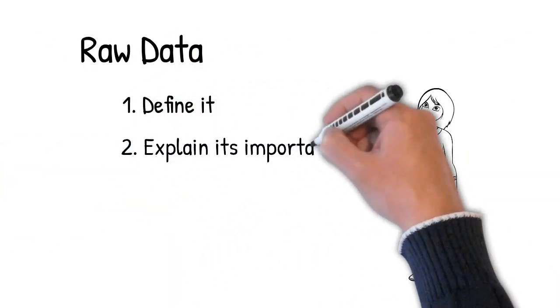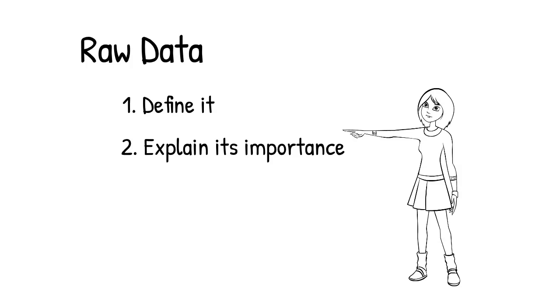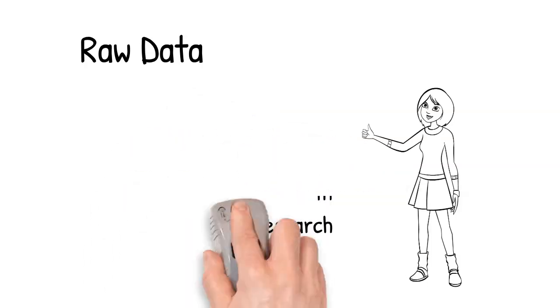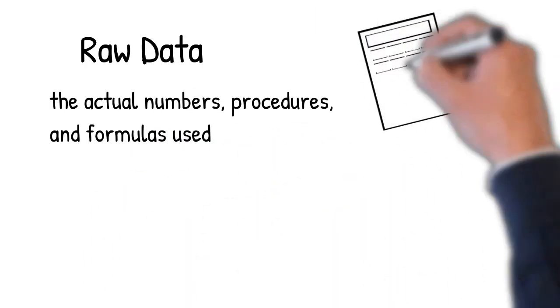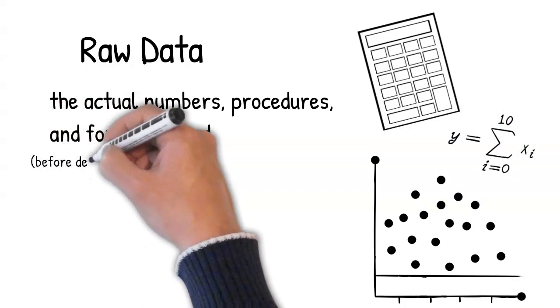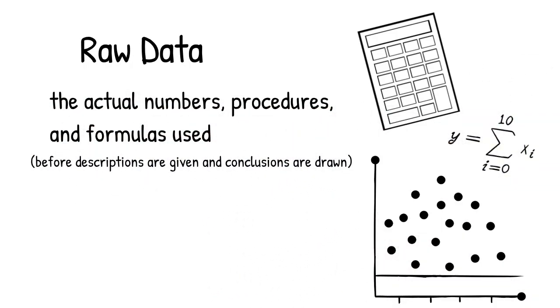Let's define raw data, explain why it's essential by using a real-world example, and show you how to use this standard in your own research. Raw data simply means the actual numbers, procedures, and formulas used—the original information before descriptions are given and conclusions are drawn.